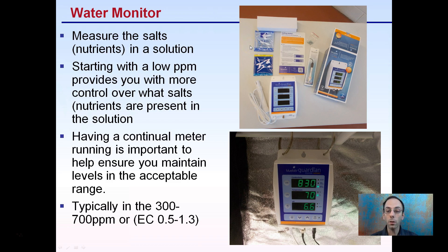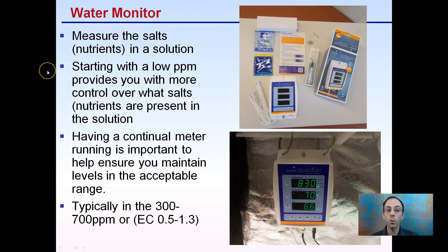We want to monitor and measure the salts or nutrients in the solution. Starting with a low PPM provides more control over what salts and nutrients are present in that solution. Having a continual running meter is important to help ensure you maintain levels in the acceptable range — typically around 300 to 700 parts per million, with an EC of about 0.5 to 1.3.